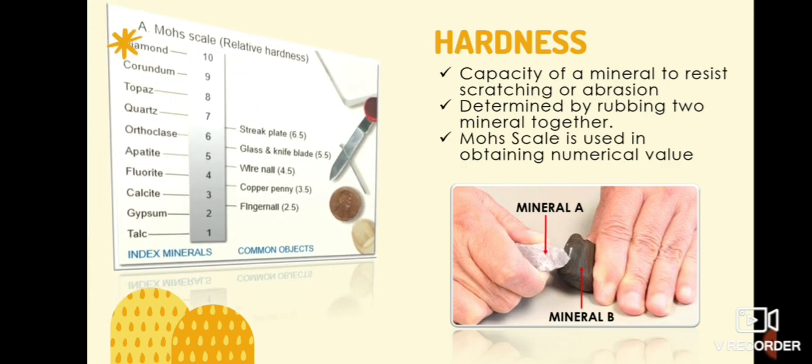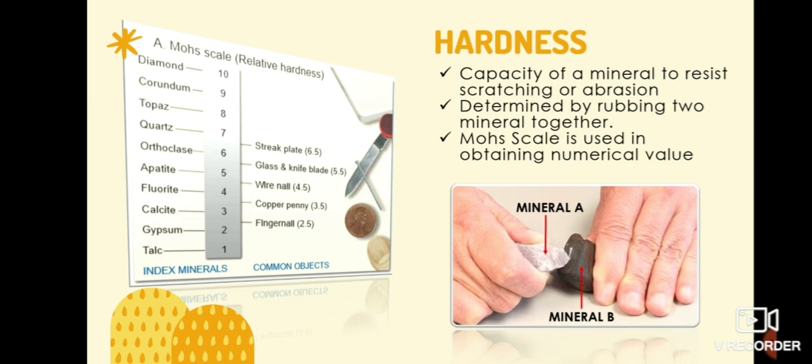The Mohs scale is used in obtaining the numerical value of hardness. It consists of 10 minerals ranging from 1 being the softest to 10 being the hardest. It means that gypsum is harder than talc, calcite is harder than gypsum, and so on and so forth. Take note that the Mohs scale shows relative ranking, so it does not imply that gypsum is twice as hard as talc. In fact, it is only slightly harder than talc.